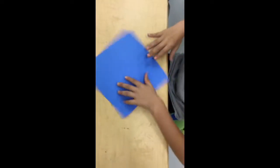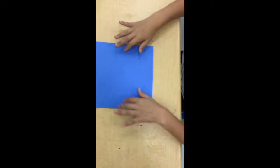This is how you make an origami chopper. First you just get a square of paper, doesn't matter what color it is.